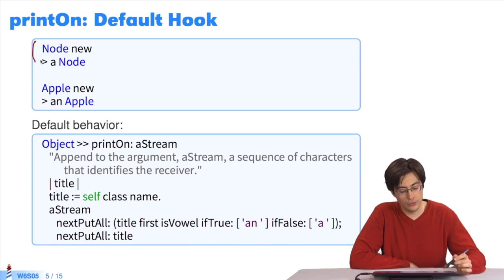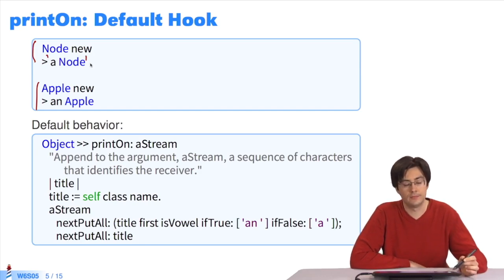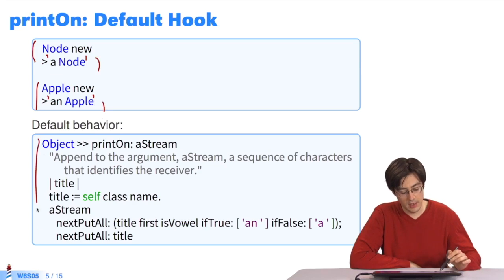If I look at what printString returns for a node and for an apple, node new returns a node. This is the printString of the node class. And here in apple, we have the printString of the apple class.